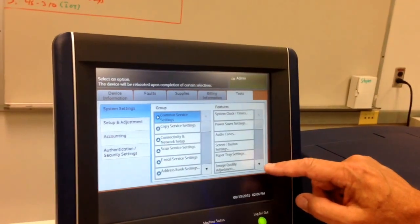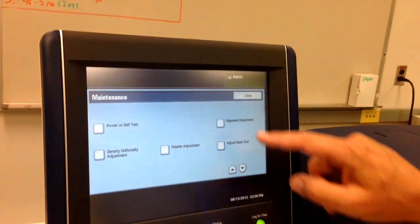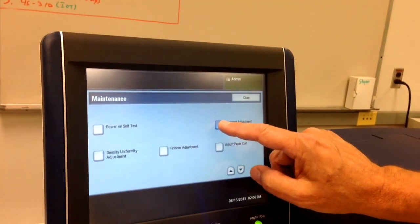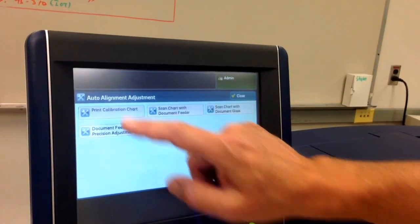You go into your Tools menu. You look for Maintenance. You go to your Alignment Adjustment. You now select Auto Alignment Adjustment.